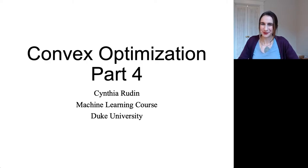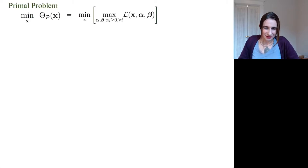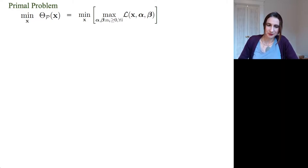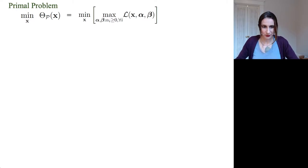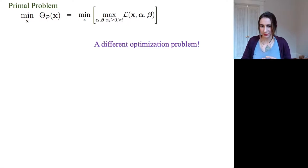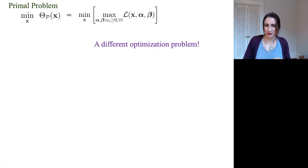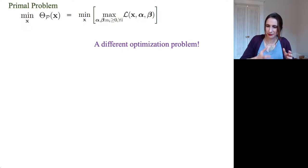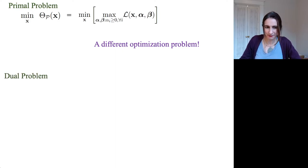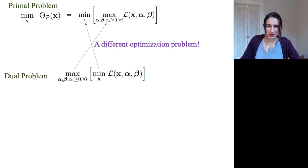Convex optimization, part four. In the last video, we showed that the primal problem can be written as the min over x of the maximum of the Lagrangian with respect to alpha and theta. What I'm going to do in this video is look at a completely different optimization problem — not a rephrasing of the first problem, but a genuinely different one. I'm going to produce the dual problem, which switches the max and the min.